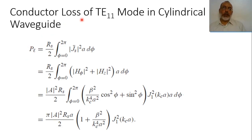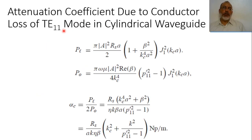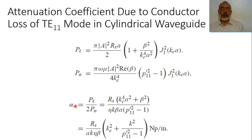Now, by using the power losses and the transmitted power, we can obtain the attenuation coefficient due to conductor loss: α_c equals P_loss over 2P_0. We have already obtained P_loss and previously obtained P_0, so the conductor attenuation coefficient α_conductor would be R_s times (k_c⁴ a² + β²) over (η k_0 β a).